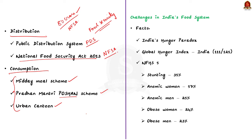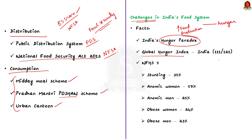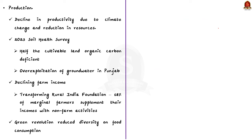Now we will talk about the challenges faced by India's food system. One way to introduce this section is to highlight the paradox — India has increasing food production alongside persistent hunger, often referred to as India's hunger paradox. India was ranked 111 out of 125 countries in the Global Hunger Index. According to the National Family Health Survey, 35% of children are stunted, 57% of women and 25% of men are anemic. These points highlight that India's food system has failed to address the problem of hunger adequately.